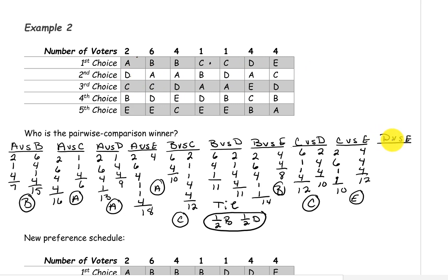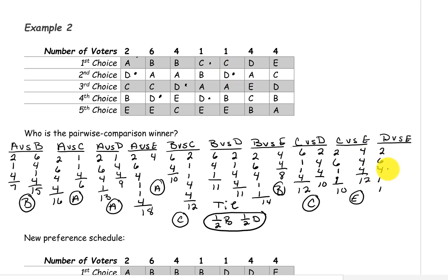And the last pairing, D versus E. D is above on the first two, on the six, on the four, on this one, on the next one, on the four, and on the last four, E is on top. So D has a total of 18 and E only has four, so D is the winner of that pairing.